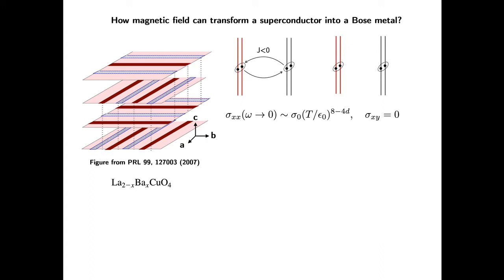Although a metallic state can be produced by fitting fermionic quasiparticles between stripes, this will spoil the concept of Bose metal and the zero Hall conductivity.